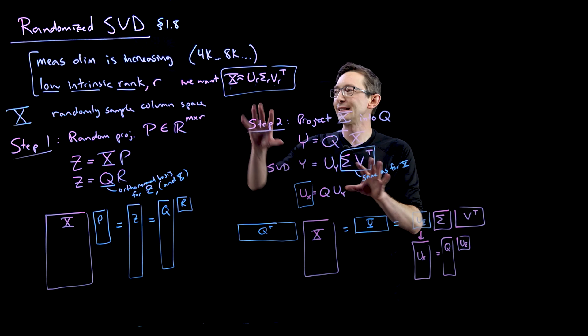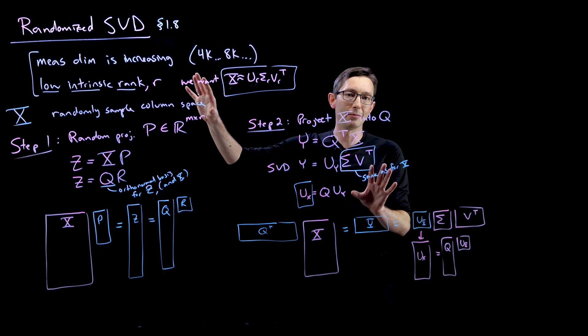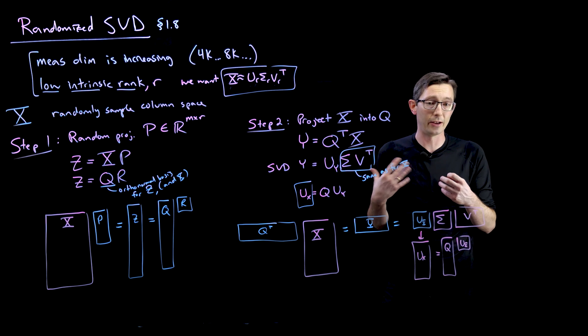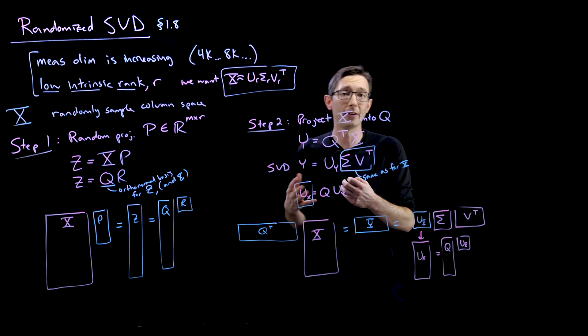Now, there's a couple of things I'll tell you about. This is the vanilla version of randomized SVD. There's a couple of techniques that make it a lot more effective and efficient. One is called power iterations and the other one is called oversampling.